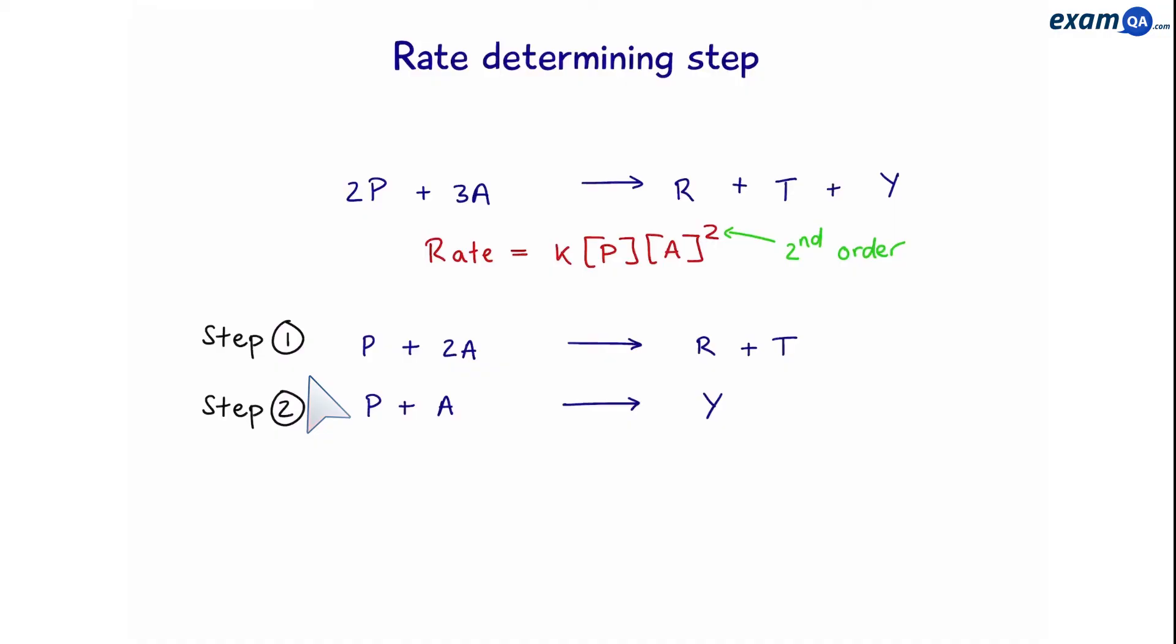There's a bit of a problem here. Because both step 1 and step 2 have P and A, which is exactly what we have in the rate equation, P and A. However, because there's a 2 over the A, that means we want to have one P and two As, which means step 1 is the rate determining step.